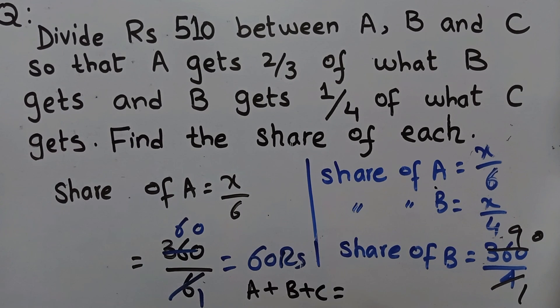Now we will check: 90, 60 and 360 add up to 510.